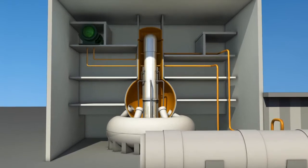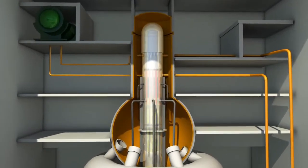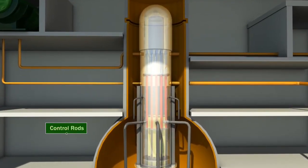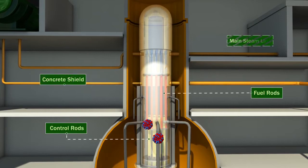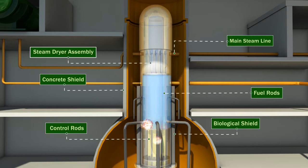In case of a commercial boiling water reactor, the following process takes place. The core inside the reactor vessel creates heat due to nuclear fission. A steam water mixture is produced when very pure water moves upward through the core, absorbing heat.